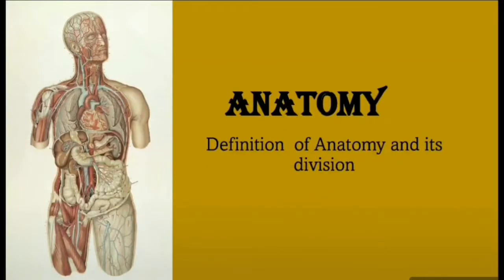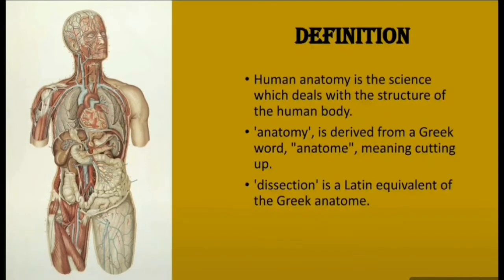Firstly, we'll be dealing with what is the definition of anatomy and its subdivisions. Human anatomy is a science which deals with the structure of the human body — what structures are present and what their different functions are. Anatomy is derived from a Greek word called 'anatome', meaning cutting up, and dissection is the Latin equivalent of the Greek anatome.